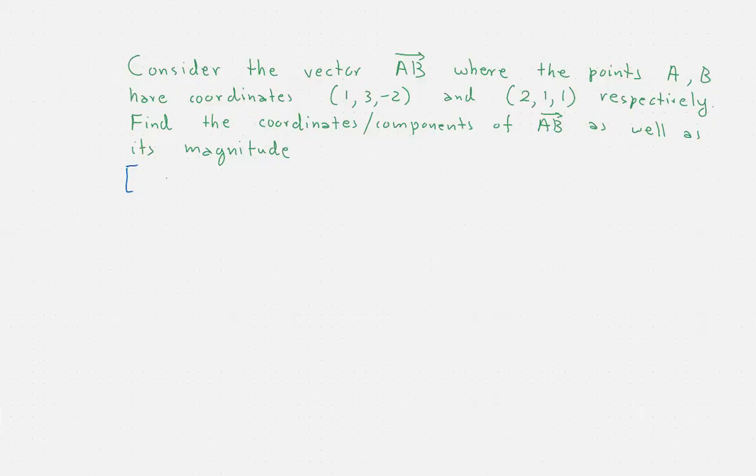Okay, so we would like to solve the following very simple problem. We have a vector AB where the points A and B have the following coordinates. The point A has coordinates one, three, negative two, and the point B has coordinates two, one, one.